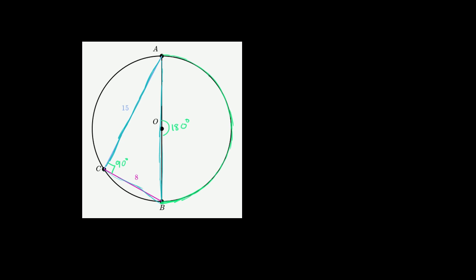Fifteen squared plus eight squared is going to be the length of side AB squared. So let me just call this side right over here, let me just call that X. That's going to be equal to X squared.